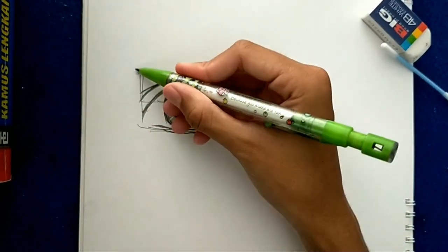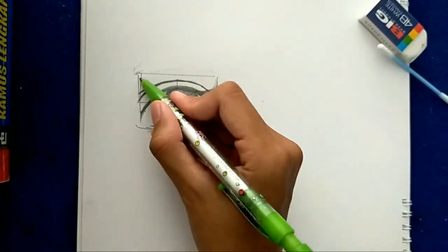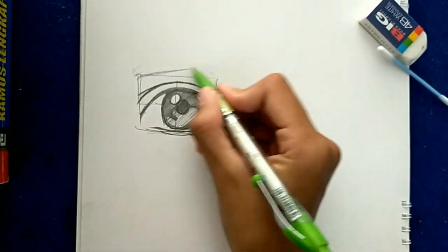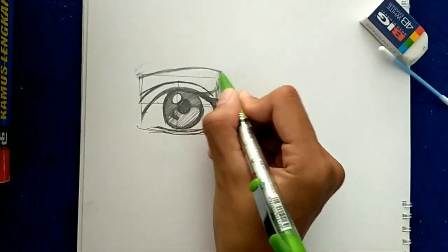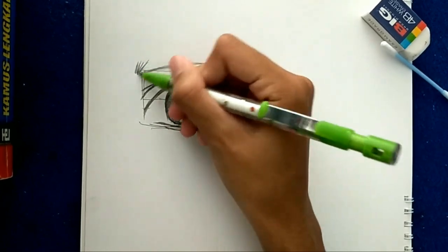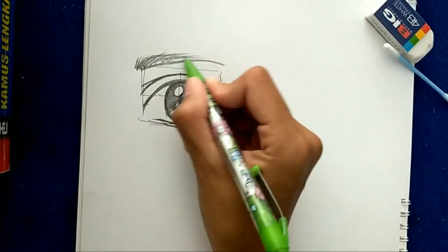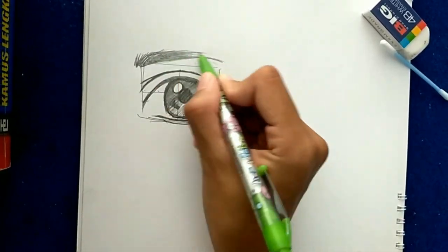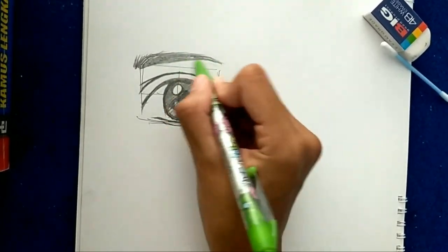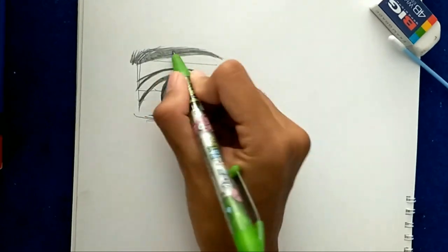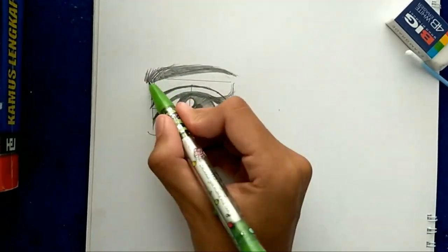Now we will make the eyebrow. I make the eyebrow by making the shape of the eyebrow first. And then I draw some short lines like this from the base of the eyebrow to the corner of the eyebrow. Make sure it looks like the real eyebrow.